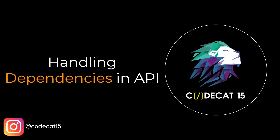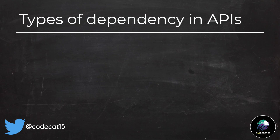Welcome to another episode of Learning Swift with CodeCat15. This is your host, Ravi. Today's session, we will talk about dependencies with APIs. When we are working on a project, we get two types of API dependencies.